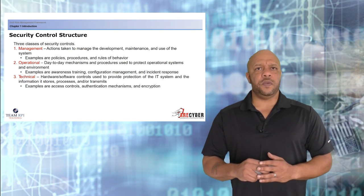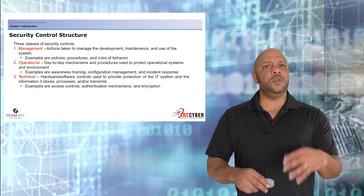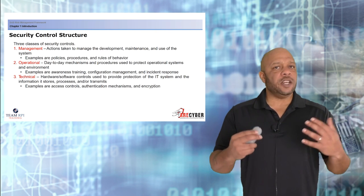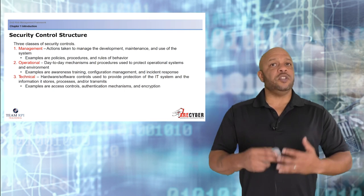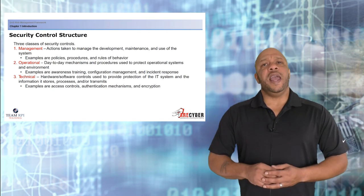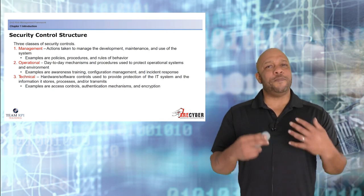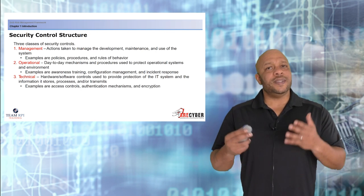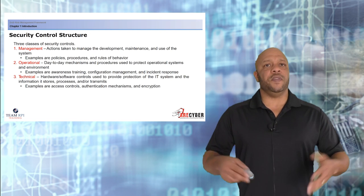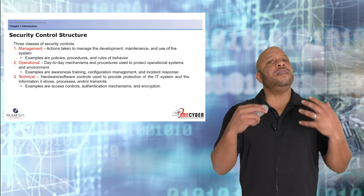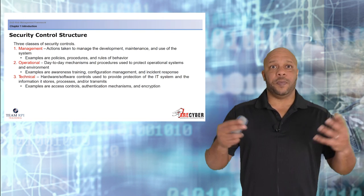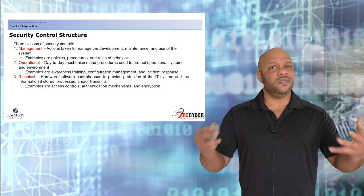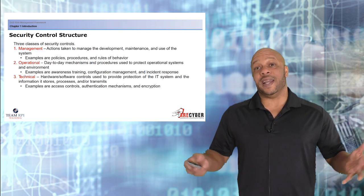When dealing with the risk management framework, everything is broken down into three classes of security controls. First, management controls — these are actions taken to manage the development, maintenance, and use of the systems, like policies and procedures. Then operational controls, the day-to-day mechanisms of how we operate in a given environment. And then the technical controls — these are the hardware and software controls and how the devices are configured, such as authentication mechanisms and encryption.